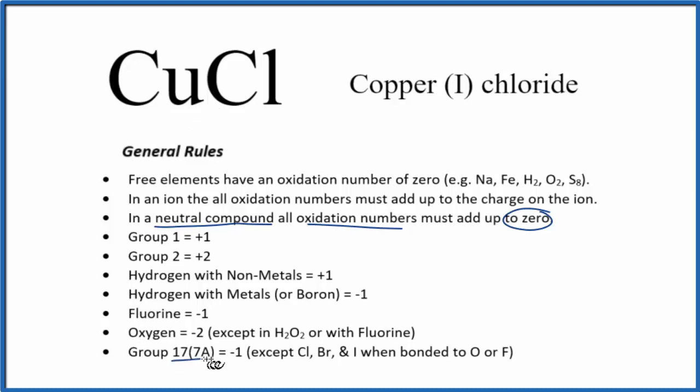Group 17, sometimes called 7A, those are the halogens. Chlorine is in that group there. It will be minus 1, with a few exceptions when it's bonded to oxygen and fluorine. So here, the chlorine will have an oxidation number of minus 1.